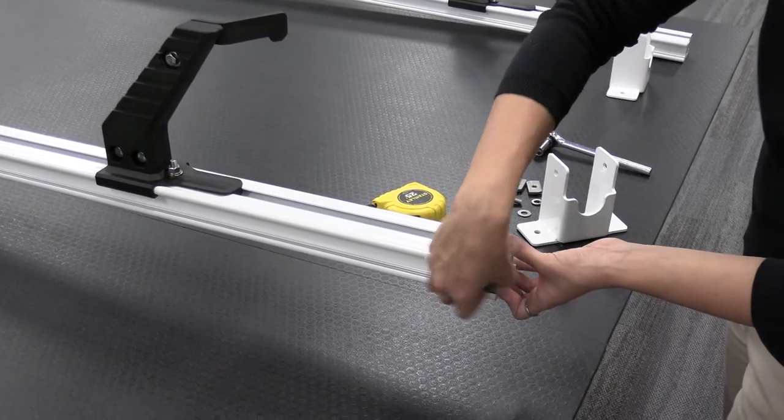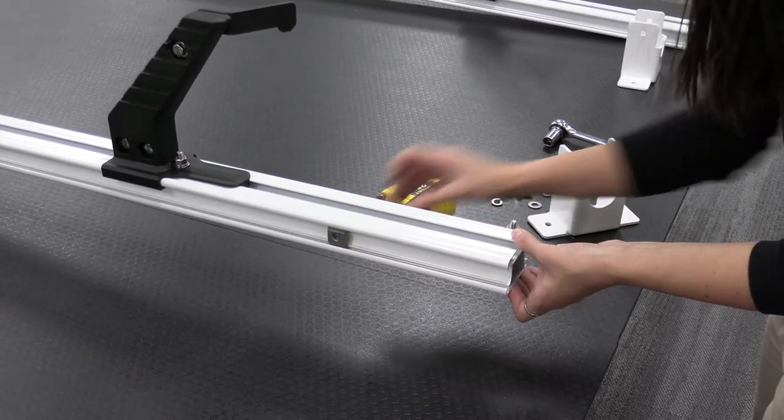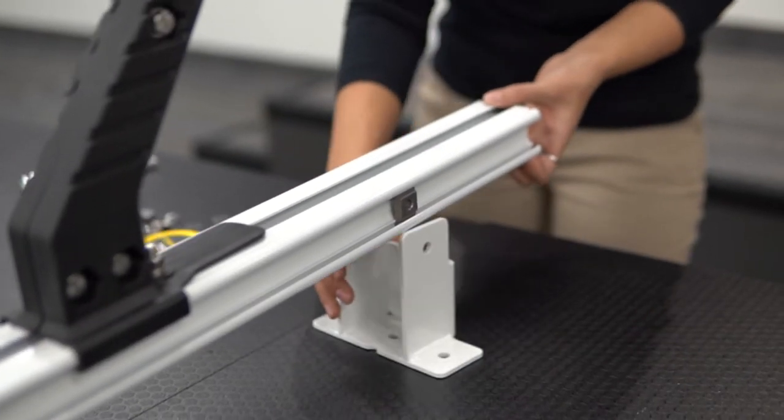To do so, slide two channel nuts into either side of the crossbar and attach the foot using a flat washer, lock washer, and hex bolt.